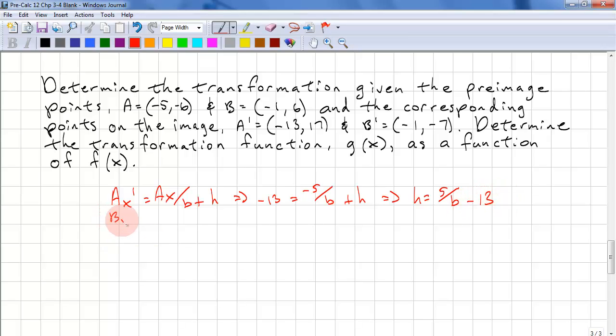We have Bx' equal to Bx divided by b plus h. So we have -1 = -1/b + h. Now we can substitute this h into here. So we have -1 = -1/b + 5/b - 13. And we can simply eliminate the brackets because we have a plus and a minus. Let's move the 13 over to the other side so it becomes positive. 13 - 1 is 12. And we have 4/b left on this side. So therefore, b must be 4/12.